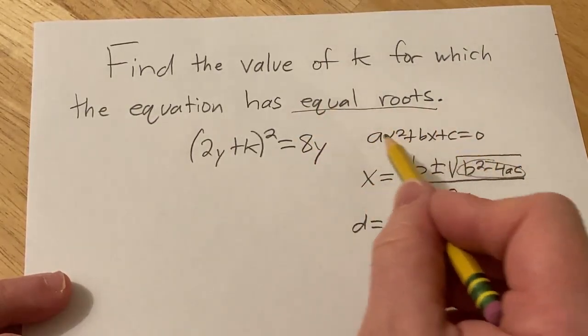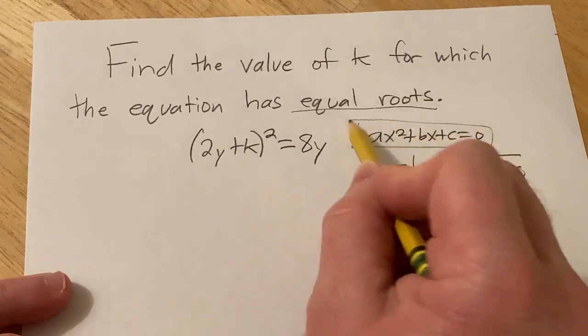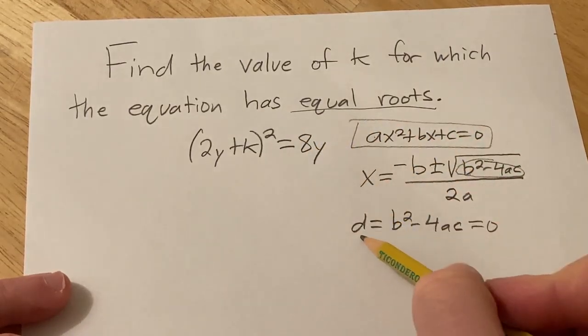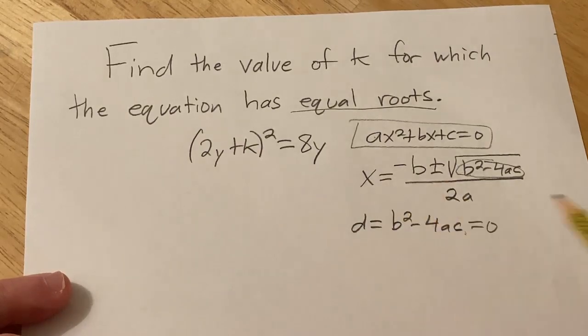So in this problem, we're going to put the equation into this form, we're going to identify a, b, and c, and then we'll set the discriminant equal to 0 and solve for k.